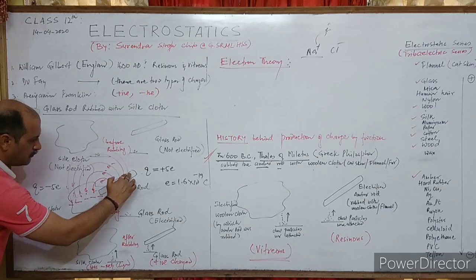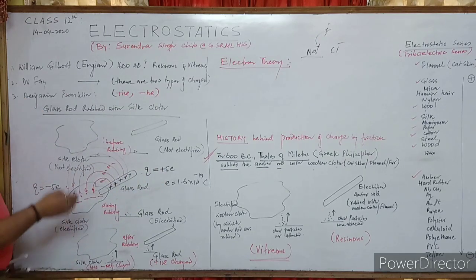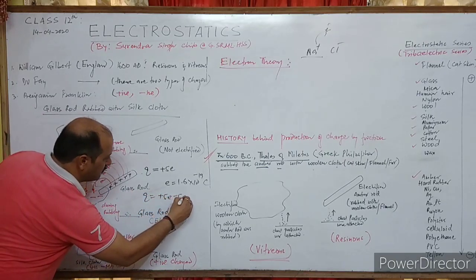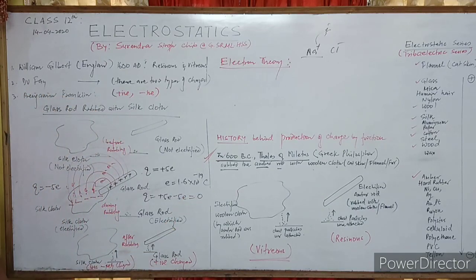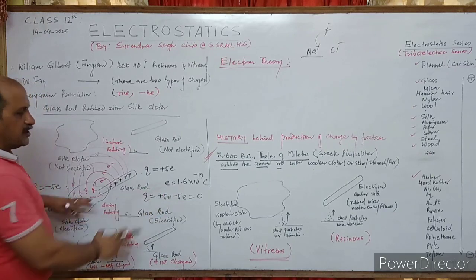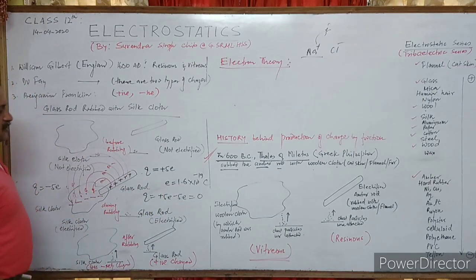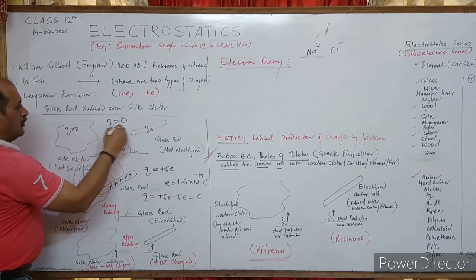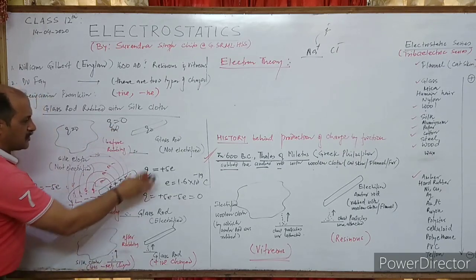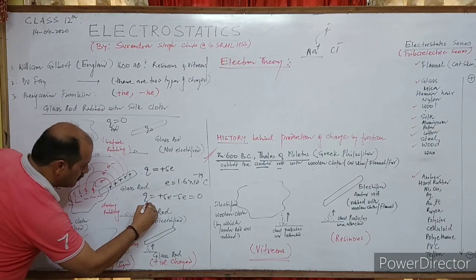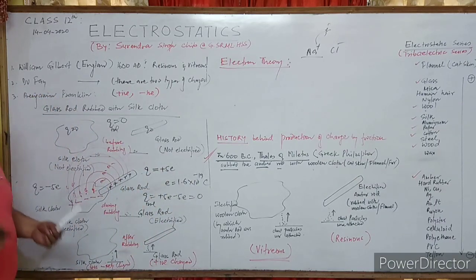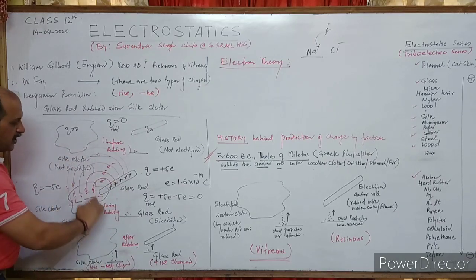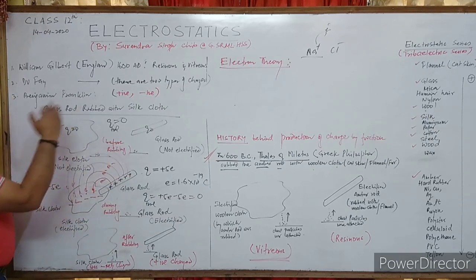How many charges are here? Plus five. What is here? Minus five. What is the total charge? Total charge: +5e + (−5e) = 0. Charge is conserved — this is conservation of charge. The total charge before rubbing was zero, and after rubbing it is still zero. Charge is produced in pairs: one positive, one negative. If it is five positive here, it will be five negative there.